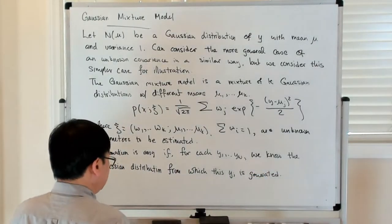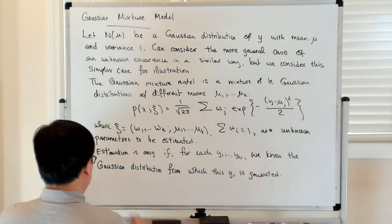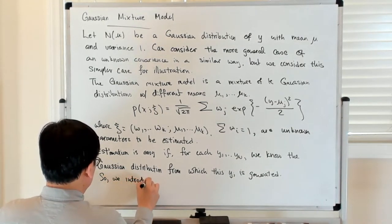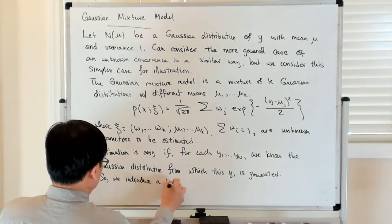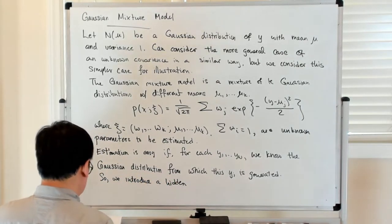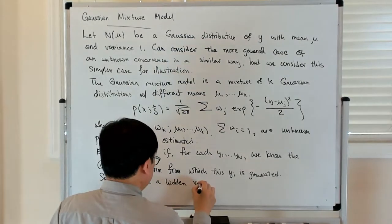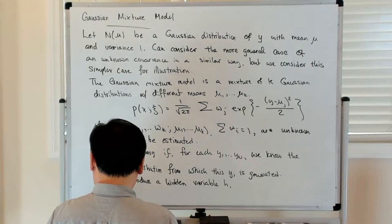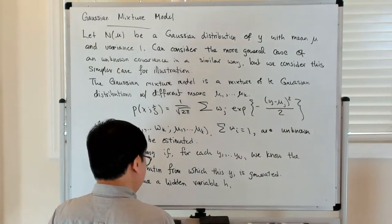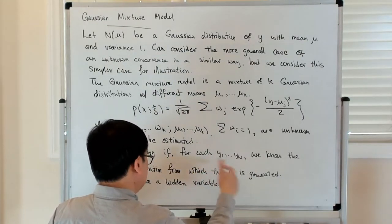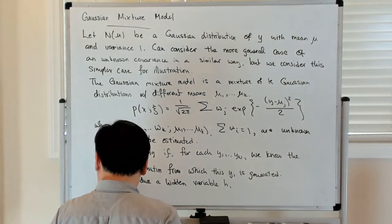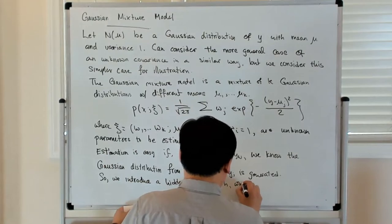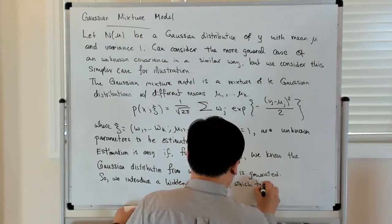So I'm going to introduce a hidden variable. Let's call it h, which takes value i when you're drawing this from the i-th distribution.